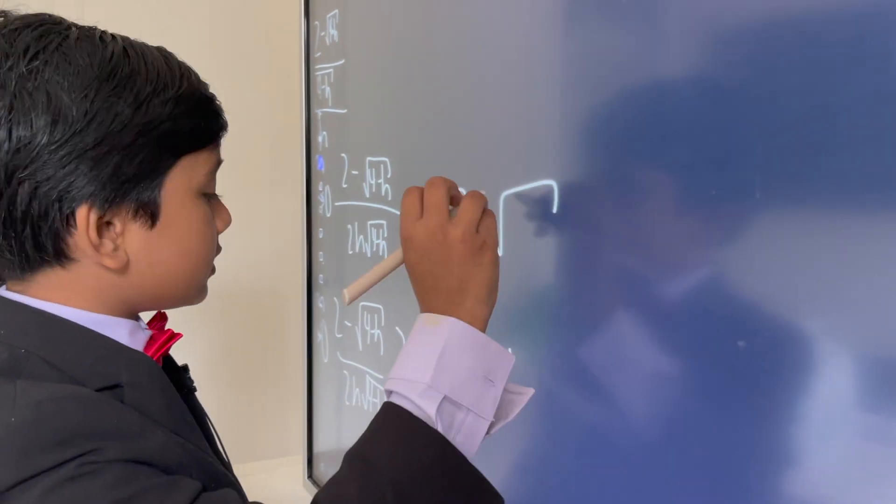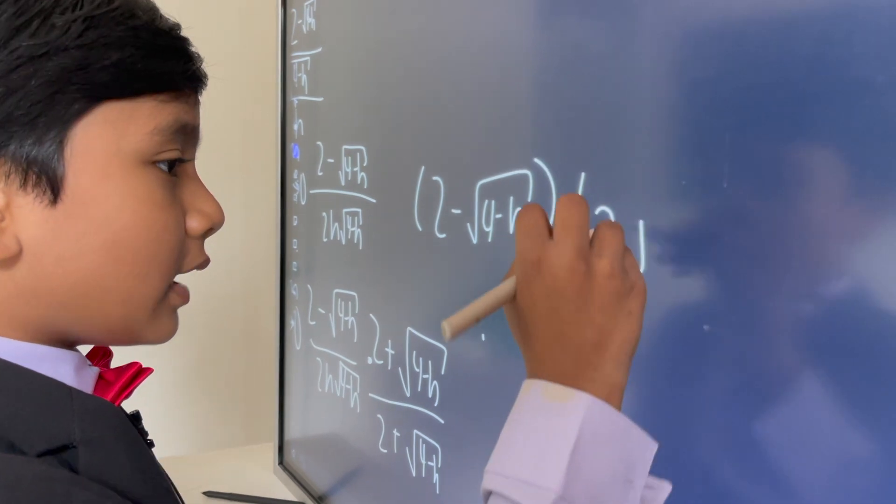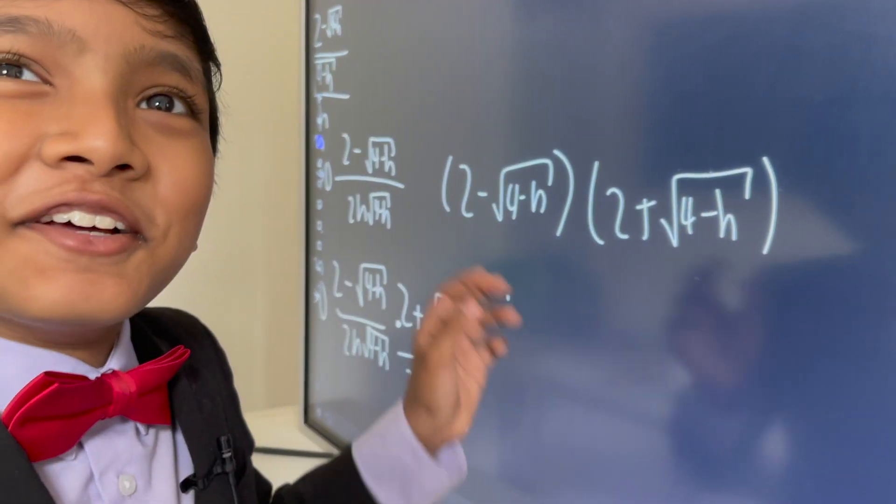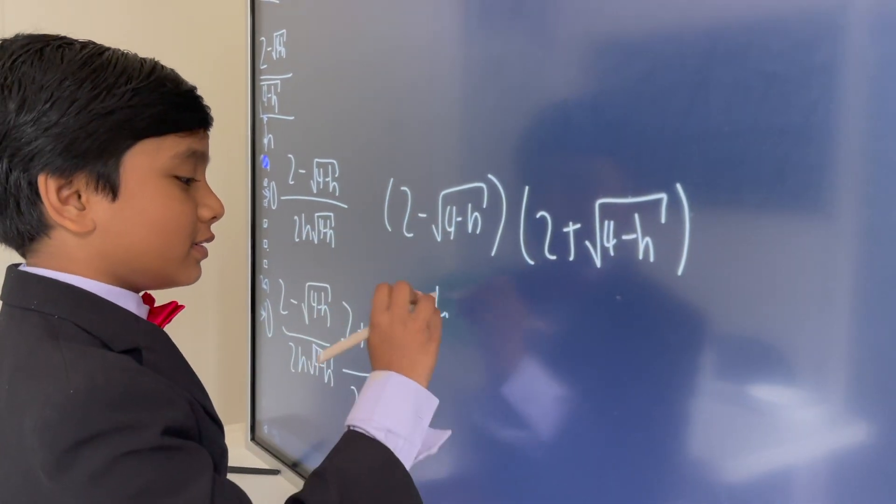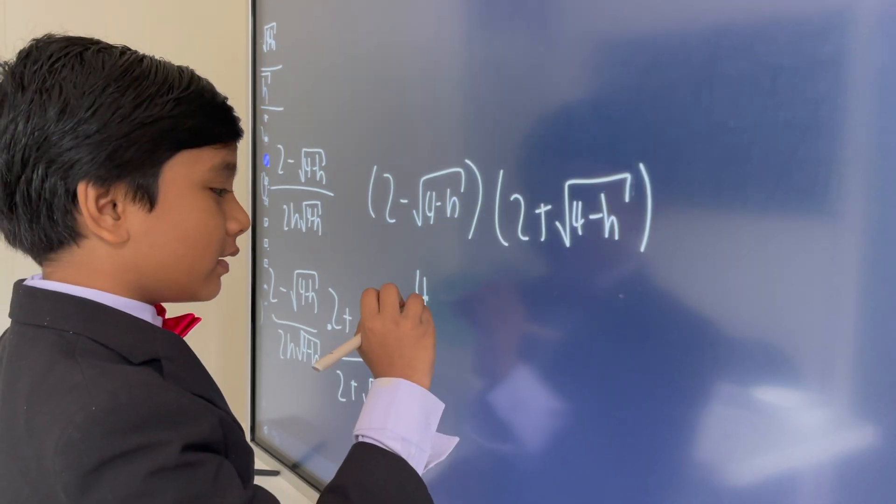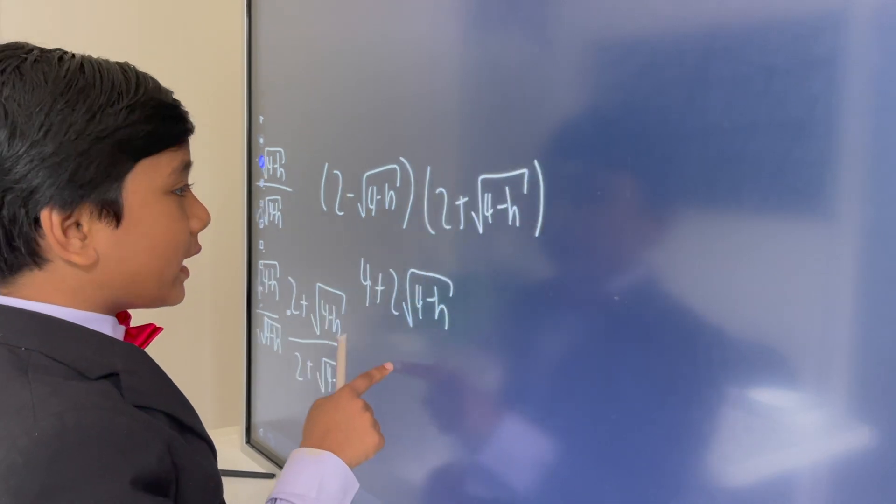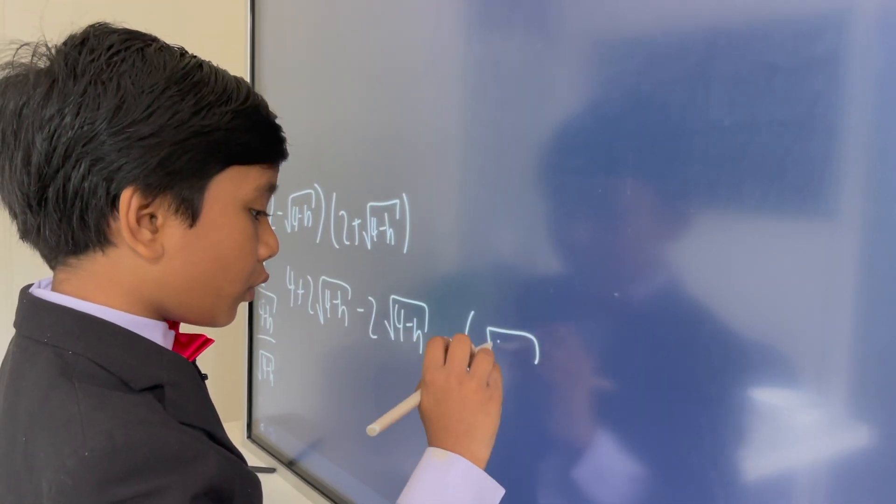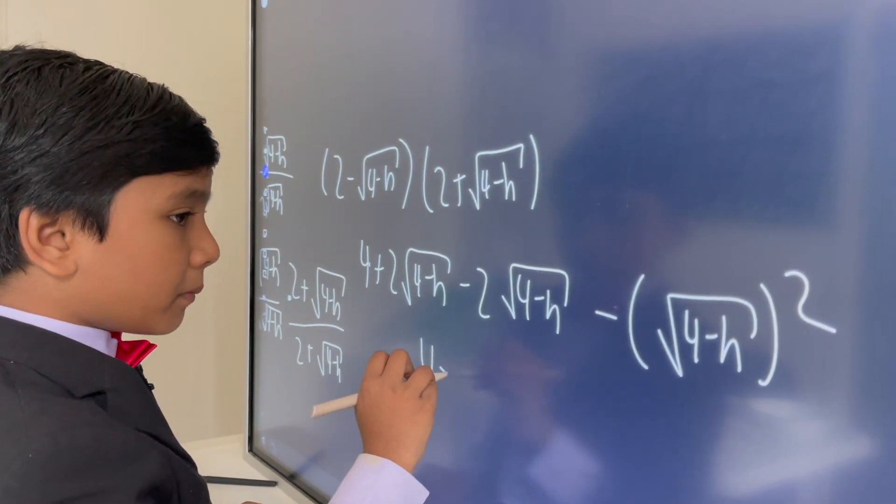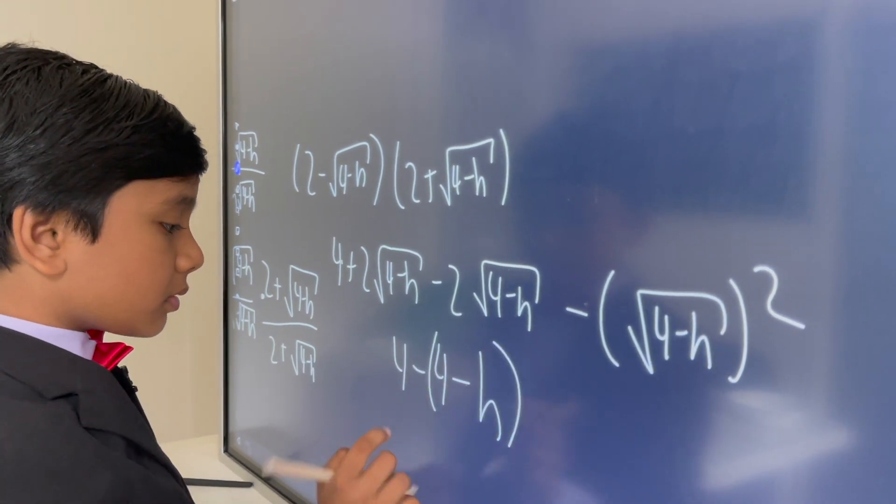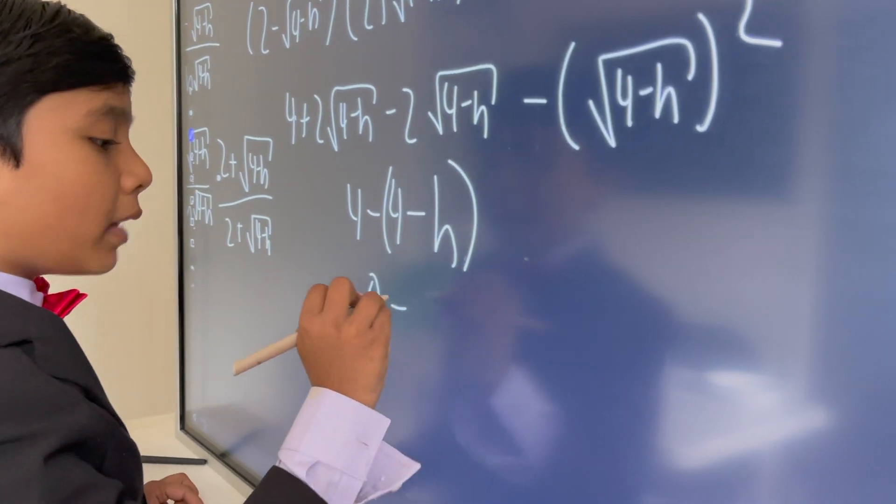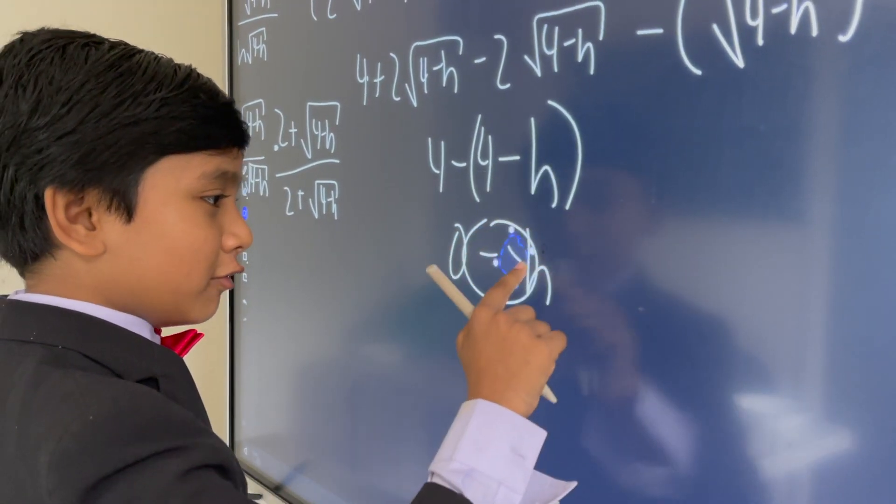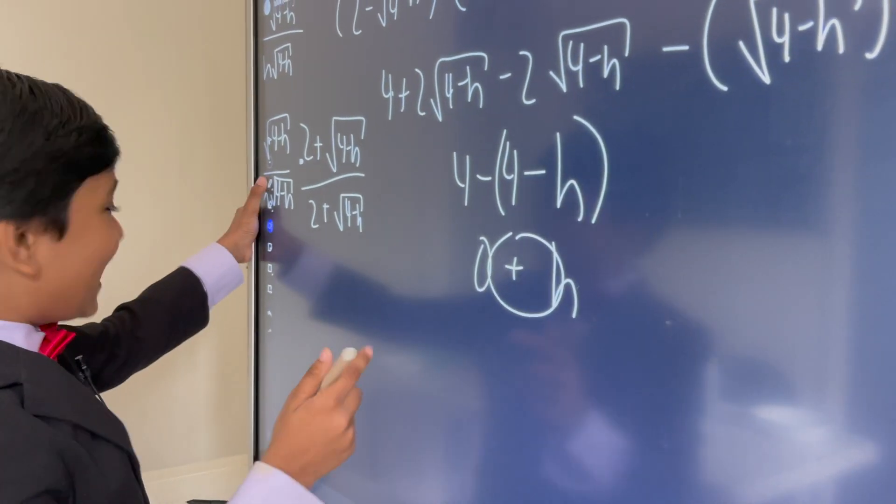Alright. So, 2 minus the square root of 4 minus h times 2 plus the square root of 4 minus h. So, now let's use the difference of squares. Mediate those differences. So, this is boring. I'll just tell you that much. But, 4 plus 2 times the square root of 4 minus h minus 2 times the square root of 4 minus h minus square root of 4 minus h whole squared. Giving us 4 minus, well, 4 minus h. But, now we distribute the negative, giving us 0 minus minus h. Alright. And now, what we do, is we do a little thing, and we rotate this, and we make this, and we get h! Yay!